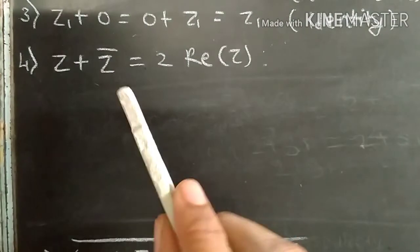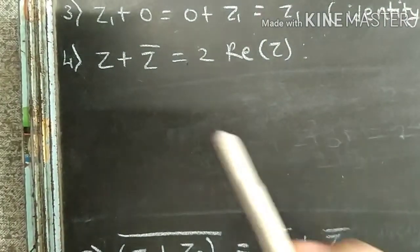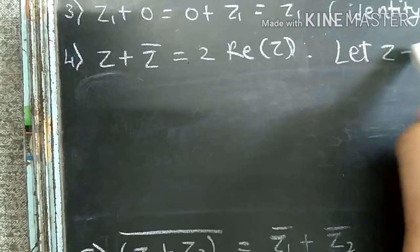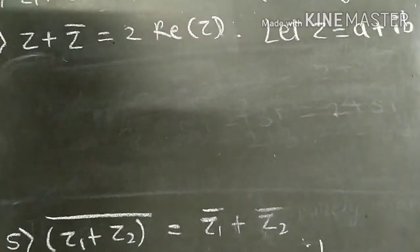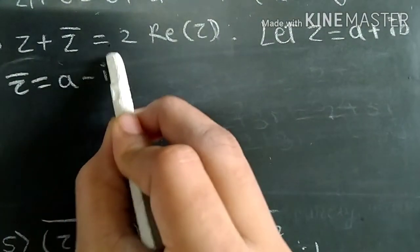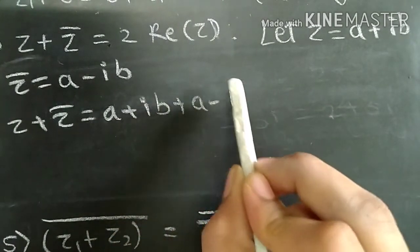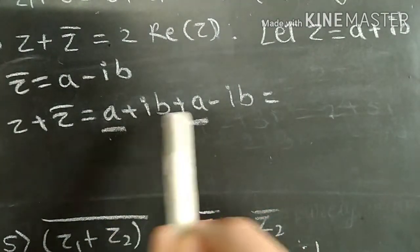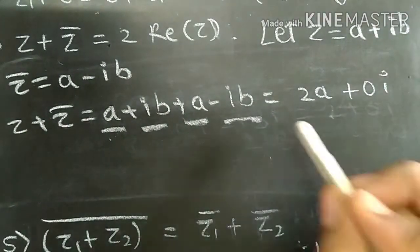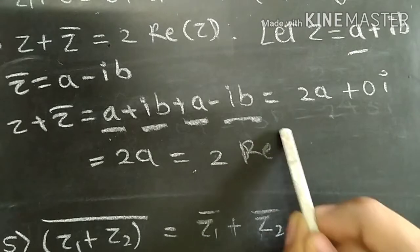Now the next property is: Z plus Z-bar equals 2 times the real part of Z. Let's prove this. Let Z equal to A plus IB, so the conjugate Z-bar equals A minus IB. Now Z plus Z-bar equals A plus IB plus A minus IB. The real parts give A plus A equals 2A, and the imaginary parts give plus IB minus IB equals 0. So this equals 2A, and since A is the real part of Z, this is 2 times real part of Z.